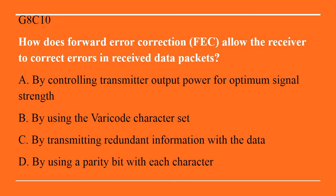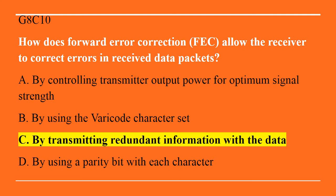G8C10: How does forward error correction allow the receiver to correct errors in received data packets? A. By controlling transmitter output power for optimal signal strength. B. By using the varicode character set. C. By transmitting redundant information with the data. Or D. By using a parity bit with each character. The answer is C, by transmitting redundant information with the data.